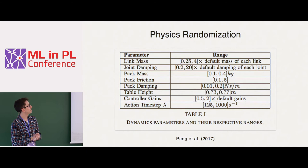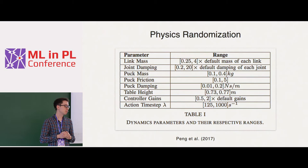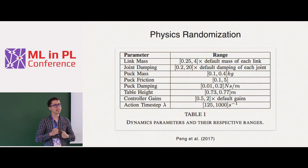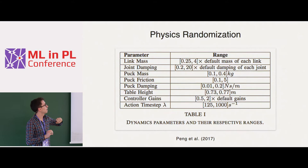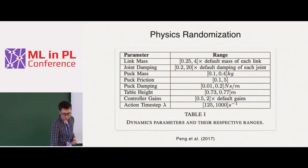Since domain randomization works well for vision, we asked whether we could apply a similar technique to the dynamics of the system to aid transfer of control policies. We first tried it on a simpler task: pushing an object on a table. We took physical parameters like masses, friction, damping coefficients, and table height, and randomized most of them — for example, each mass is sampled from between 25% and four times our estimate. These parameters are sampled once at the beginning of each episode. We also use a policy with memory so it can learn about the current environment and adapt.